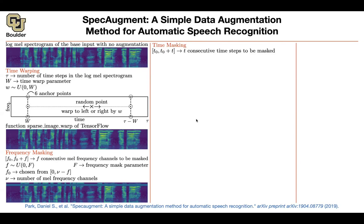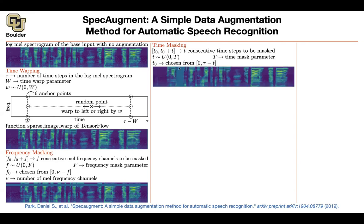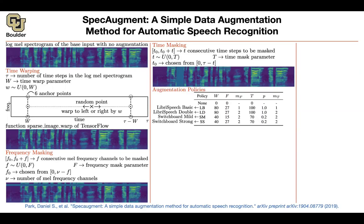You can also do time masking — you mask a portion of your time. What happens if you don't have data in that regime? And then you can have different types of augmentation policies; you can do this multiple times. For instance, you can mask multiple frames.